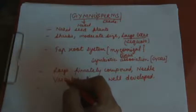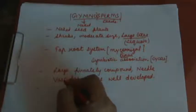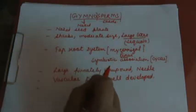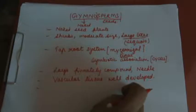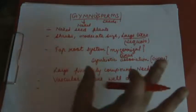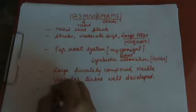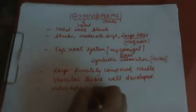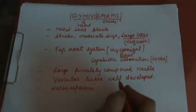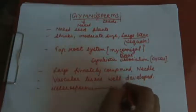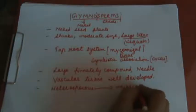Gymnosperms are heterosporous and produce microspores in male cones and megaspores in female cones. Heterosporous means producing two kinds of spores — one male and one female. These spores are formed after meiosis division.